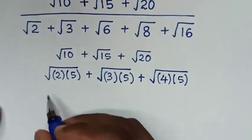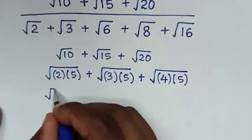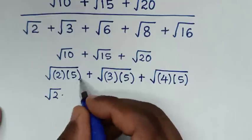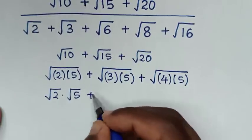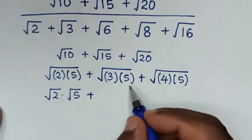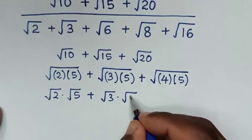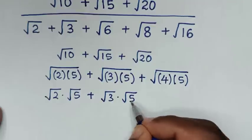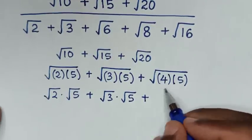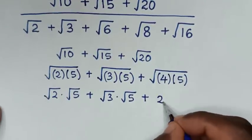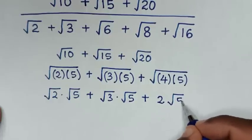In the next step, we separate these. It will be square root of 2 times square root of 5, plus square root of 3 times square root of 5, plus square root of 4 — which is 2 — times square root of 5.